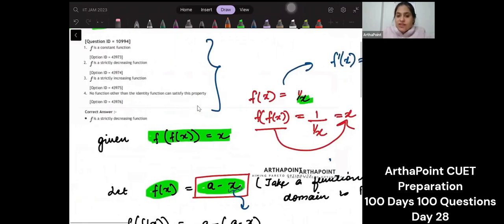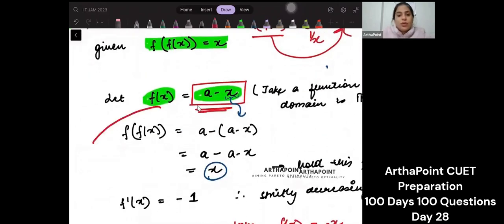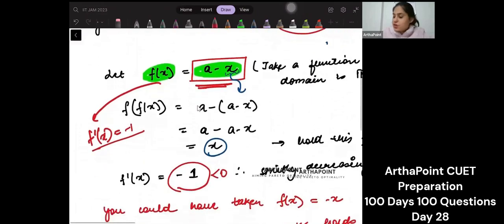Let's say your function I have taken is a minus x. Then what will be f dash x? It will be minus 1, which is less than 0, which means the function is decreasing.